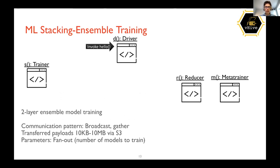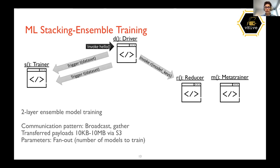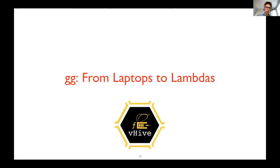Another function is machine learning stacking ensemble training. In this case, the outcome is a two-layer ensemble model that is trained. The driver triggers a number of trainers, but does it only once. After that, the driver invokes the reducer to collect the trained models and passes them to the meta trainer, which trains the two-layer ensemble model as a result. The fan-out is configurable.